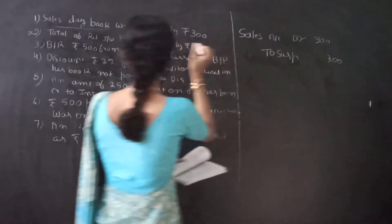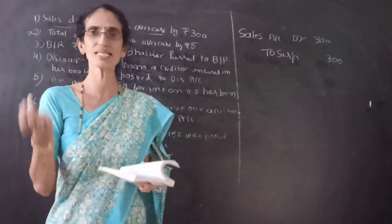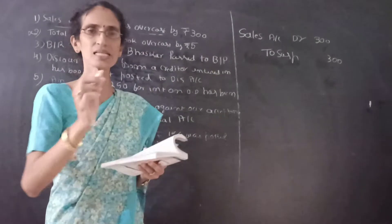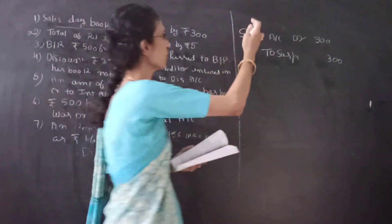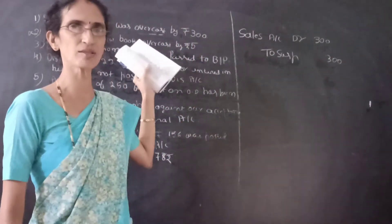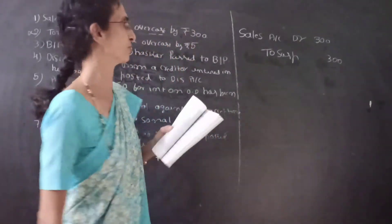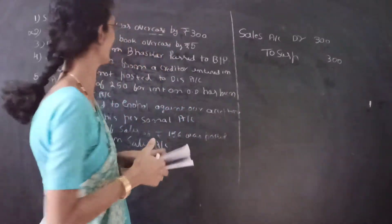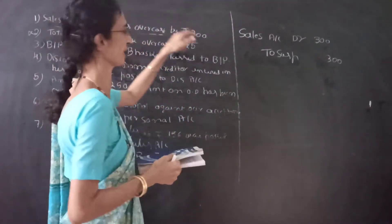Once again: if overcast, always go to the opposite side; if undercast, go to the same side. Sales is always credited, so overcast means we debit the sales account. Since only one account is affected, the other side is suspense account. The entry is Sales Account Dr. to Suspense Account. The narration is: Being the sales day book overcast, rectified.